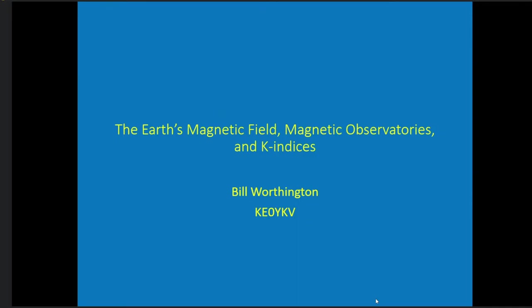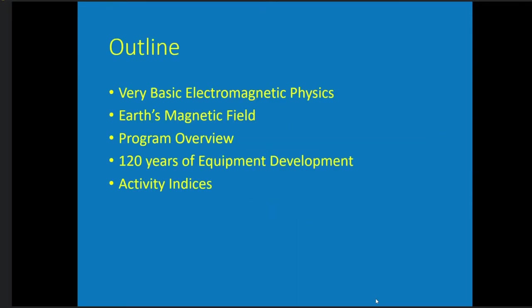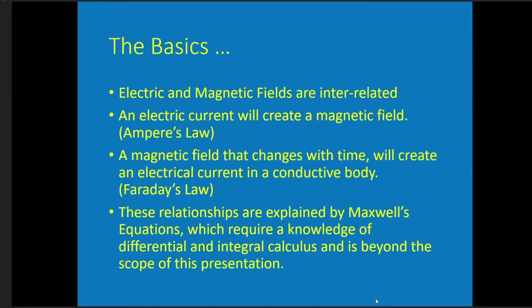For the outline, I'm going to go over some very basic electromagnetic physics, then talk about the magnetic field of the Earth, an overview of the USGS program, a little on equipment development, and finally finishing up with activity indices. So the basics: the electric and magnetic fields, as a lot of you may already know, are interrelated.